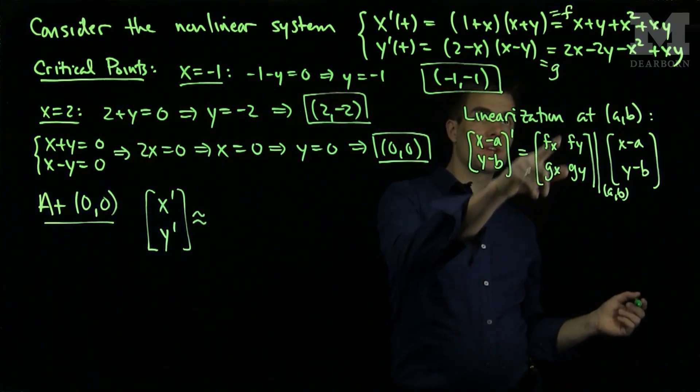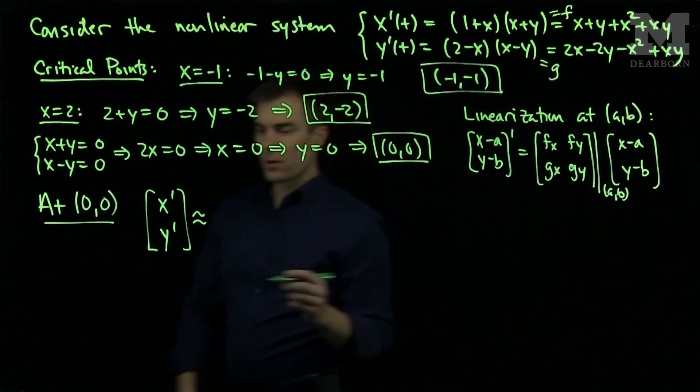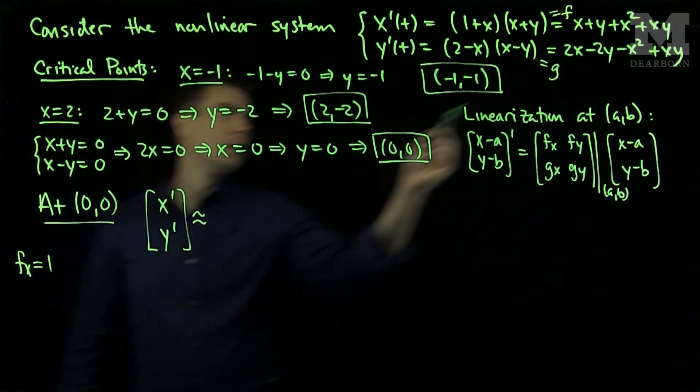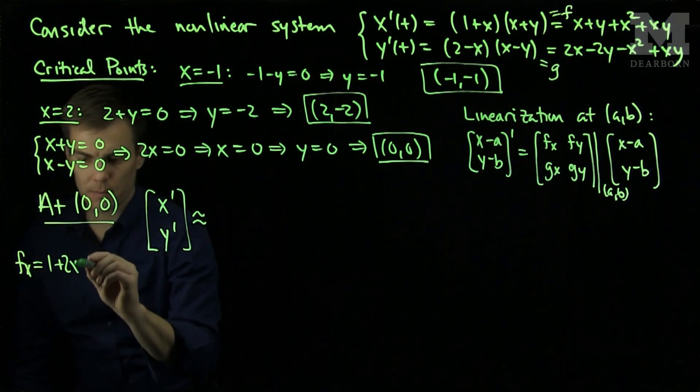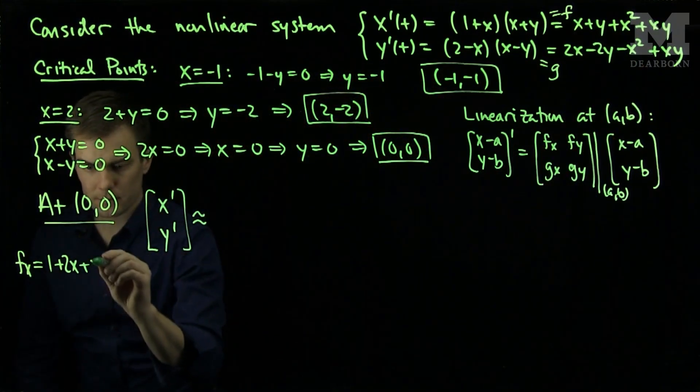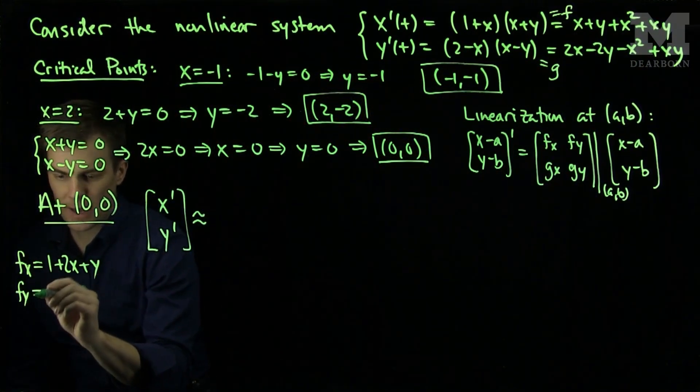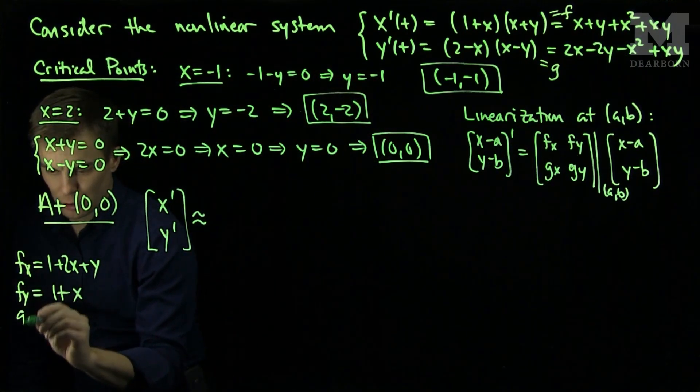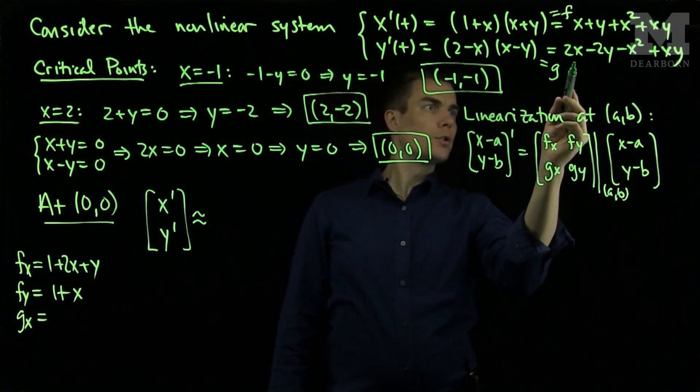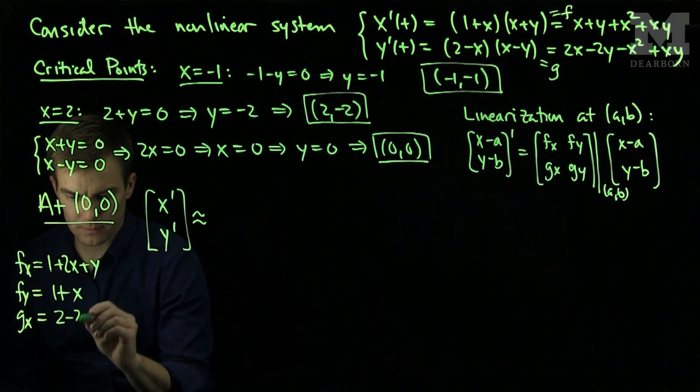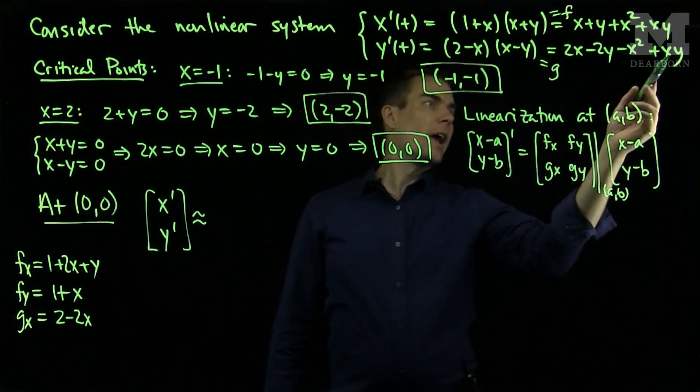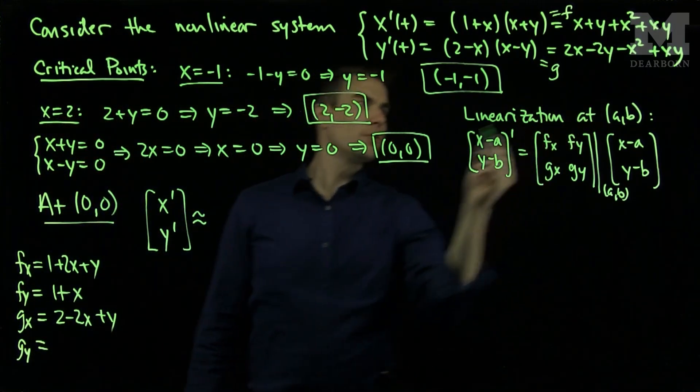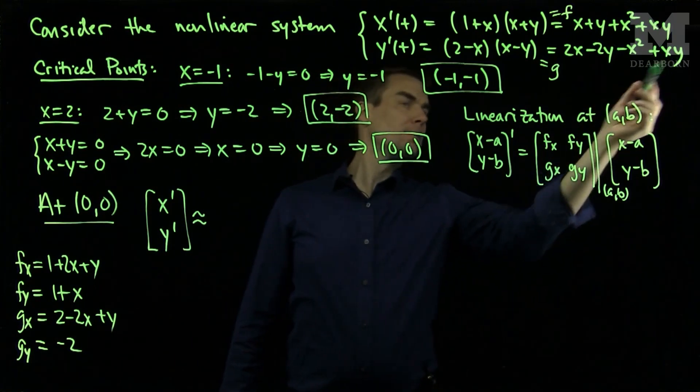Now I'll need to compute the derivatives of these things at zero, zero. So let's do the calculation over here. FX will be 1 plus 2x plus y, FY will be 1 plus x, GX will be 2 minus 2x plus y, and GY will be negative 2 plus x.